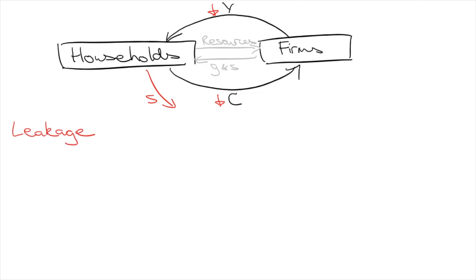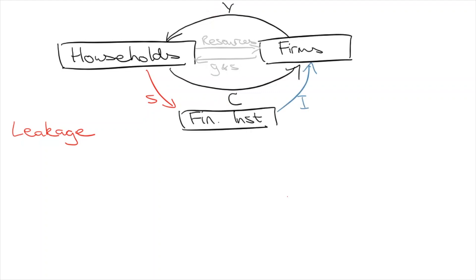Increasing the leakage will lead to less economic activity. The good news is these savings can actually go back into the circular flow. When we save, we generally put money in financial institutions like banks, who then lend it out in the form of investments. These investments contribute to the circular flow of income again, so we call them injections.